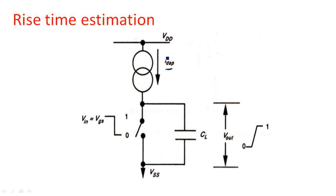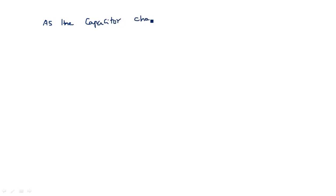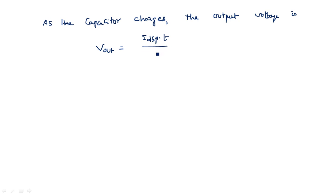As the input changes from 1 to 0, the NMOS transistor goes from ON to OFF — that is why it is open-circuited. As the current IDSP flows (IDSP refers to the PMOS transistor drain-to-source current), that same current also goes through CL and CL starts charging. During this charging period, as the capacitor charges, the output voltage is Vout = IDSP × T / CL.